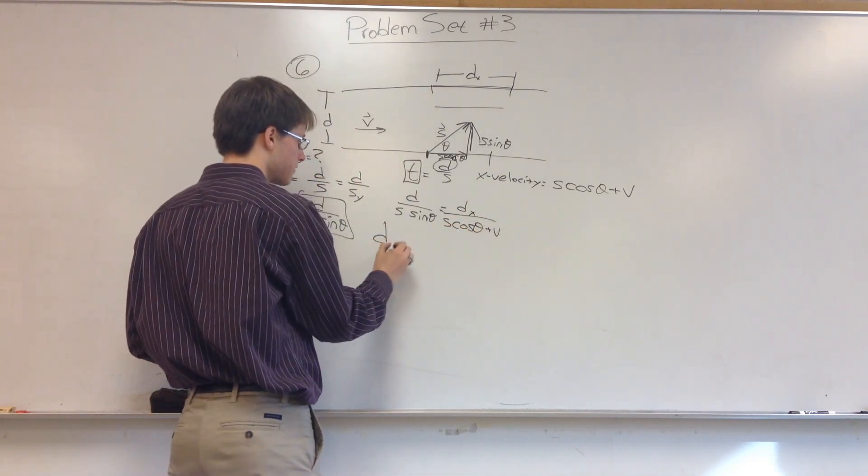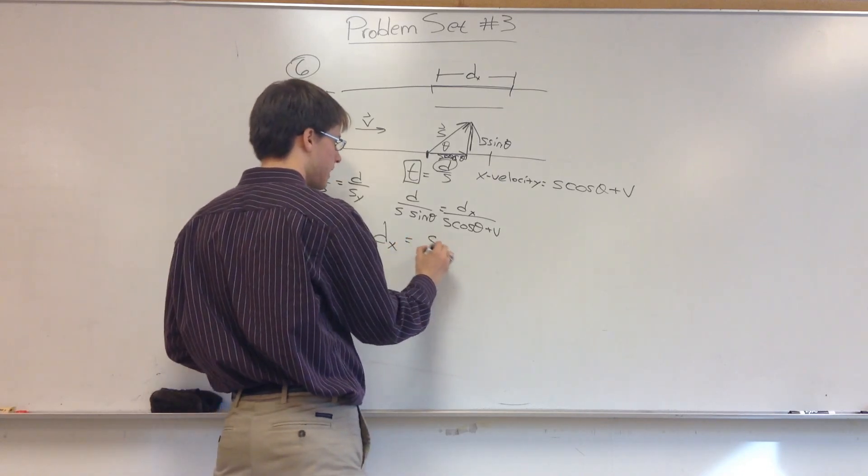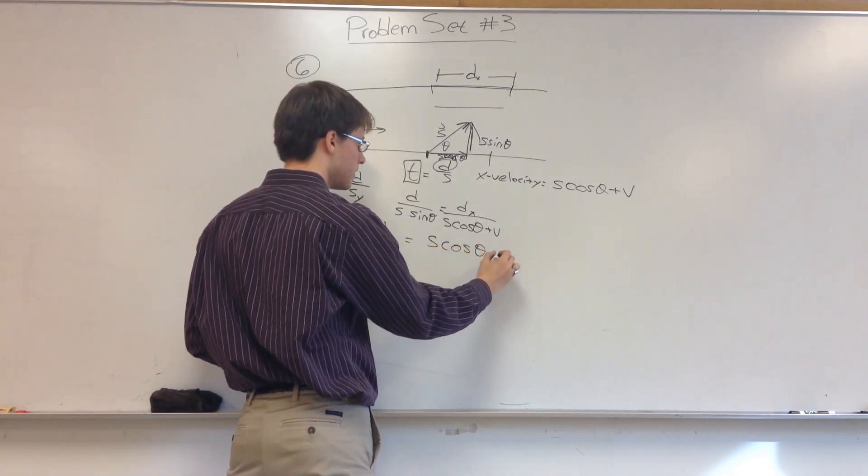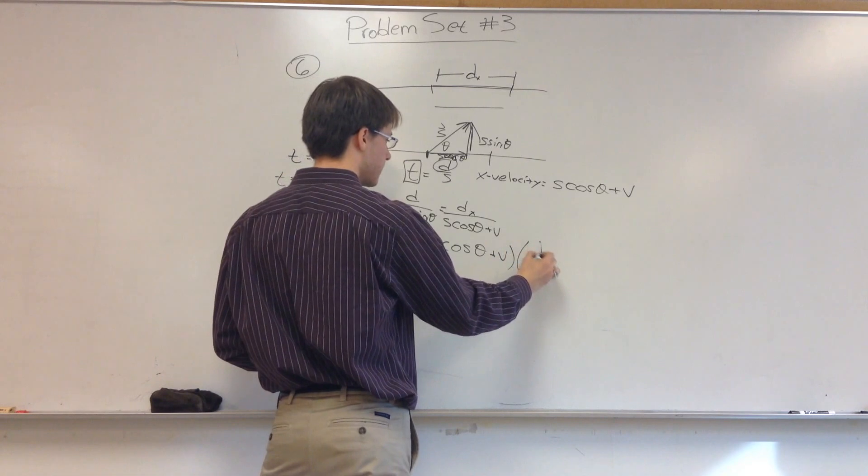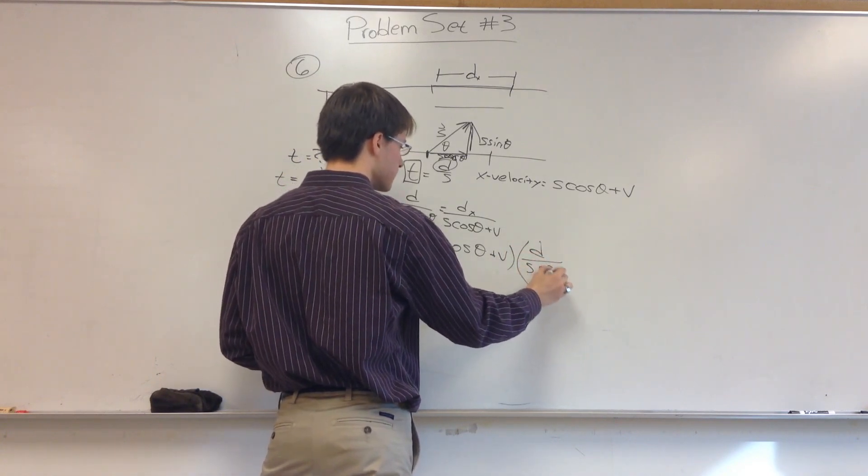So solving for DX, we have DX is equal to S times the cosine of theta plus V, all being multiplied by D divided by S times sine of theta.